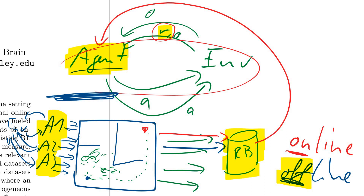Usually the power of online reinforcement learning comes from the fact that you learn from your own actions. If you already have some successful trajectories, you can try to replicate them. With other agents, you have no clue how or why they were acting — you just know they did a series of actions that gave them some reward, and all you can learn from is their sequence of actions.